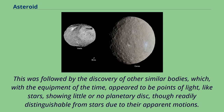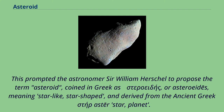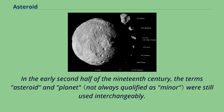This was followed by the discovery of other similar bodies which, with the equipment of the time, appeared to be points of light like stars, showing little or no planetary disk, though readily distinguishable from stars due to their apparent motions. This prompted astronomer Sir William Herschel to propose the term asteroid, coined in Greek as asteroeides, meaning star-like or star-shaped. In the early second half of the 19th century, the terms asteroid and planet were still used interchangeably.